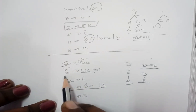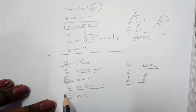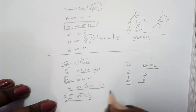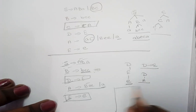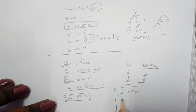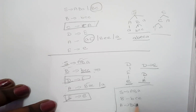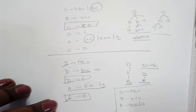So we have to eliminate the productions for D and E. The final resultant grammar will be: S → ABA, B → BCC, and A → BEE and A. This is the elimination of not-reachable symbols. Thank you.